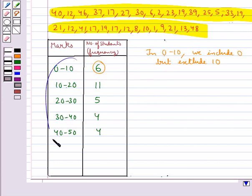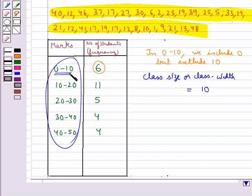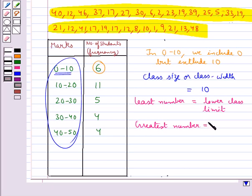These are the class intervals. Their size is called the class size or class width. In this case, the class size or class width equals 10, which is the size of each class interval. In each class, the least number is the lower class limit and the greatest number is the upper class limit.